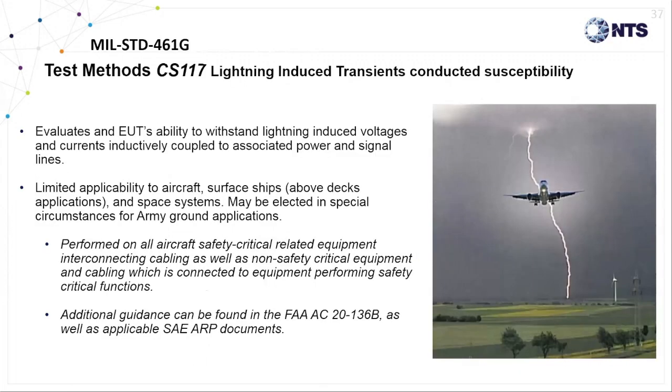The CS117 test is used to evaluate the effects of indirect lightning strikes, and this testing has limited applicability specifically for aircraft and surface ships above deck locations, as well as some space platform applications. Lightning tests can also be selected for certain Army ground platforms, but it's not common. Testing is recommended for all aircraft safety-critical related equipment, cabling, as well as non-safety-critical equipment cabling that may be connected to equipment performing safety-critical functions. Additional guidance can be found in SAE ARP 5416, which covers the aircraft lightning test requirements and methods.